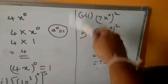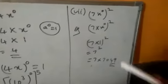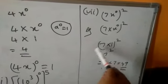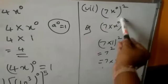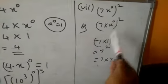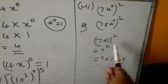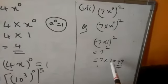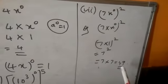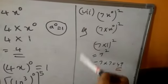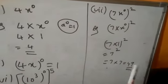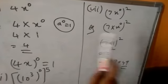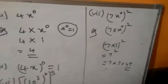Seventh one: (7x to the power of 0) whole to the power of 2. Here, x to the power of 0 equals 1, so 7 × 1 = 7, whole squared. So 7 squared equals 7 × 7 = 49. Seventh one answer is 49. I hope all students — the remaining problems follow the same model; you have to do them similarly. Thank you, students.